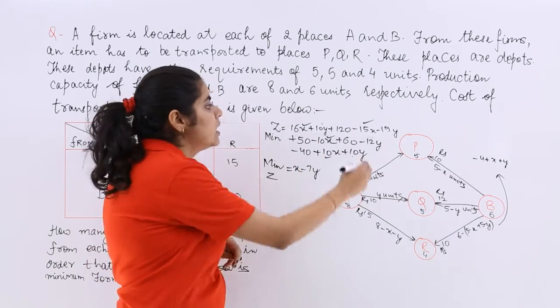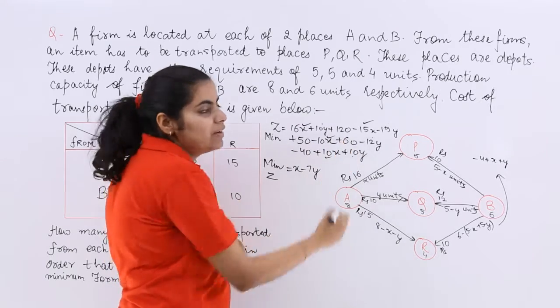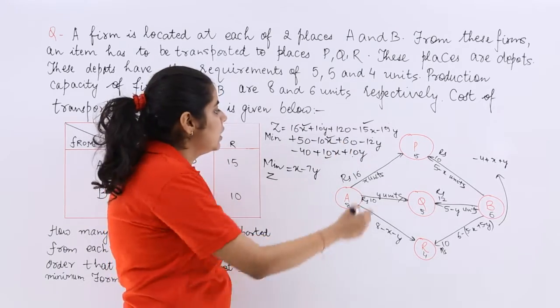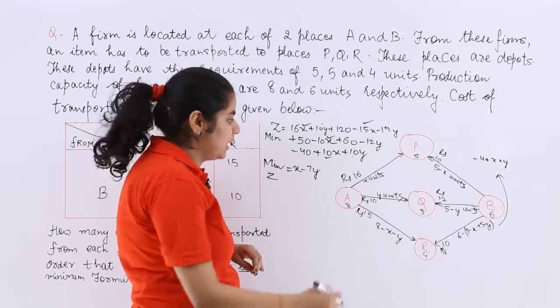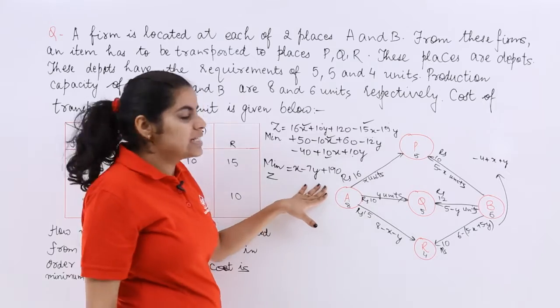About the numbers, let's see. 120 plus 50 is 170. 170 plus 60 is 230. 230 minus 40 is 190. So 190. So that is your Z.